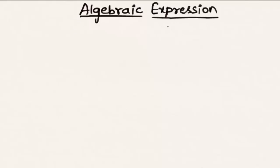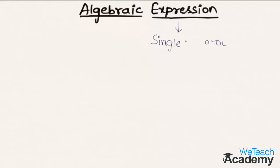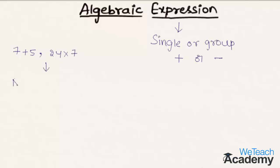First let us know what is an expression. An expression can be defined as a single or group of terms combined with the symbols plus or minus. For example, we have two expressions: 7 plus 5 and 24 into 7. If every term of an expression is a constant term, then we call such expression a numerical expression.